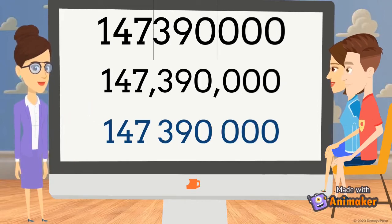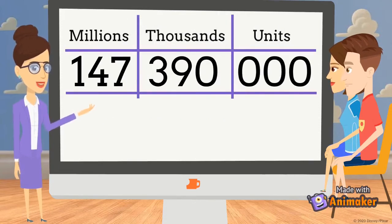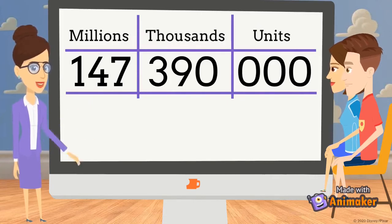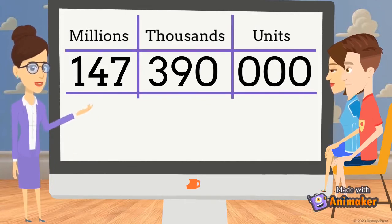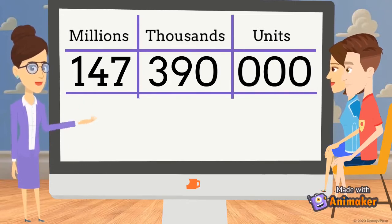Teacher, how do we name these periods? I will show you in a table. From the right side, the first period is units, then thousands, then millions, and after that billions. But here there are no digits in billions. In each period there should be three digits, but in the most left period there may be one or two digits.